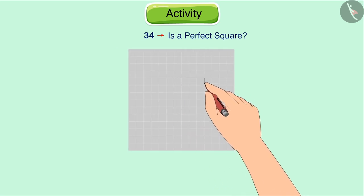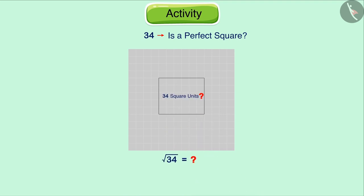Now, let's discuss a new number 34. Is 34 a perfect square? Can you draw a square whose area is 34 square units? Can you find the square root of 34? Let's try to draw a square of 34 square units on a graph paper. We observe that we are unable to form such a square. This is because 34 is not a perfect square.